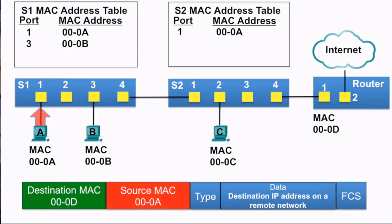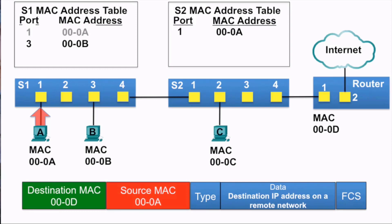The Ethernet frame is sent to switch S1. Switch S1 receives the frame and examines the source MAC address, which is in its MAC address table, so it simply refreshes the 5-minute timer. It then examines the destination MAC address, and because that destination MAC address is not in the MAC address table of switch S1, it floods it out all ports.